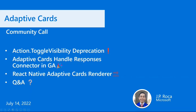Welcome everyone to the July Adaptive Cards Community Call. We have a lot of topics to cover today, but I don't think we'll take the whole time. The first topic is Action.ToggleVisibility deprecation. Next, we'll talk about the Adaptive Cards Handle Responses Connector featured in last month's community call, and we'll end with the React Native Adaptive Cards Renderer and the Q&A section.